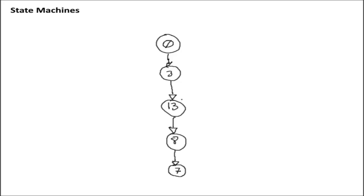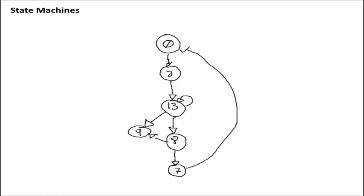But what happens if you don't have a straight sequence? What if you have branching sequences, loops, branches, and paths converging on each other? In those sorts of situations, you have a very, very complicated sequence. So how do you build a circuit that can handle it?